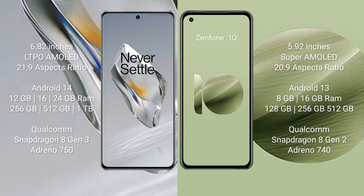The OnePlus 12 runs on Android 14, while the Asus Zenfone 10 runs on Android 13. The OnePlus 12 comes with 12GB, 16GB, or 24GB of RAM and 256GB, 512GB, or 1TB of internal storage, powered by the Qualcomm Snapdragon 8 Gen 3 processor with Adreno 750 GPU.